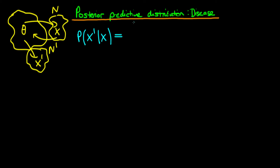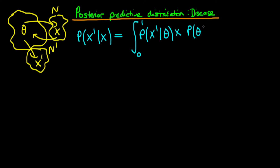We know from before that this is equal to the integral from 0 to 1 of the joint probability of x-primed and theta, which we can rewrite in terms of the probability of x-primed given theta. There's no conditioning on x here because once we condition on theta, x and x-primed are independent. So it's the likelihood times the probability of theta given x — our original posterior density derived before.